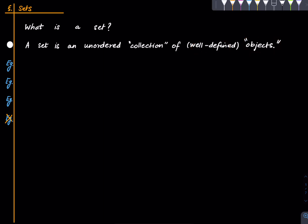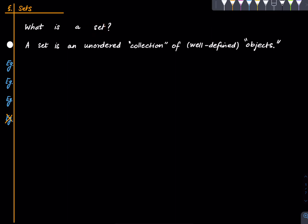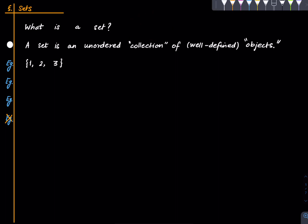We were trying to define a set and we have a sentence which has more undefined things than the thing we were trying to define, but still it hints at something, and the best way to understand what we are trying to say is through examples. So this is a set — when we talk about a set we draw curly braces, and the things inside the curly braces are called the objects or elements of the set. Here the set is the first three natural numbers. It's well-defined because it's clear what the elements are with no ambiguity, and it's unordered.